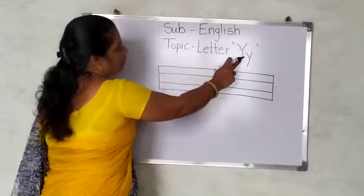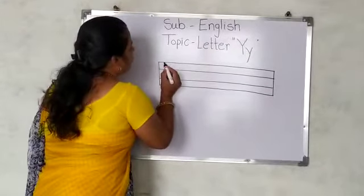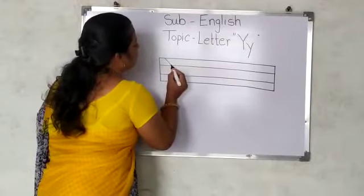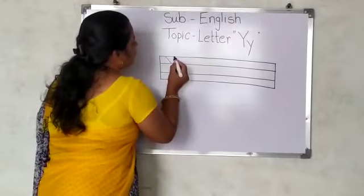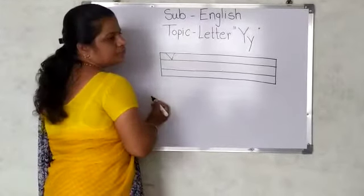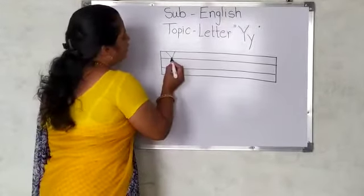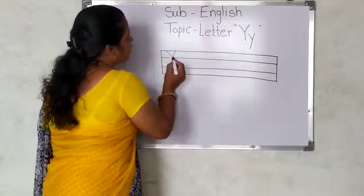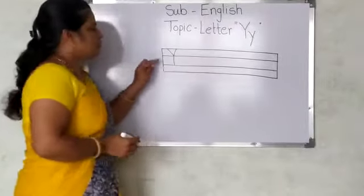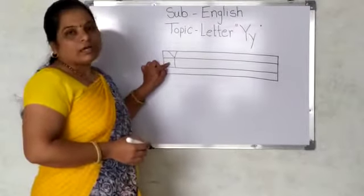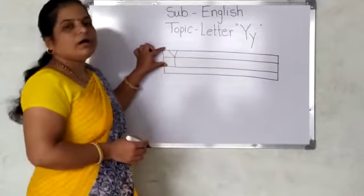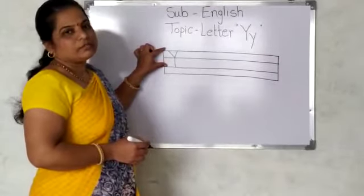Capital Y is: make a slanting line, join slanting line, and standing line down. This is capital Y, and it is in three lines.